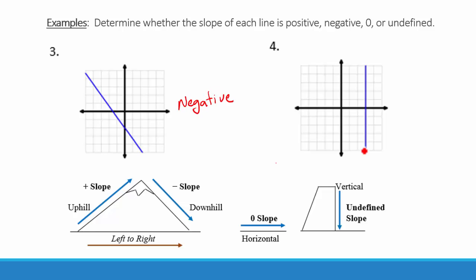For number four, the line is perfectly vertical. When we have a perfectly vertical line, we say the slope is undefined.